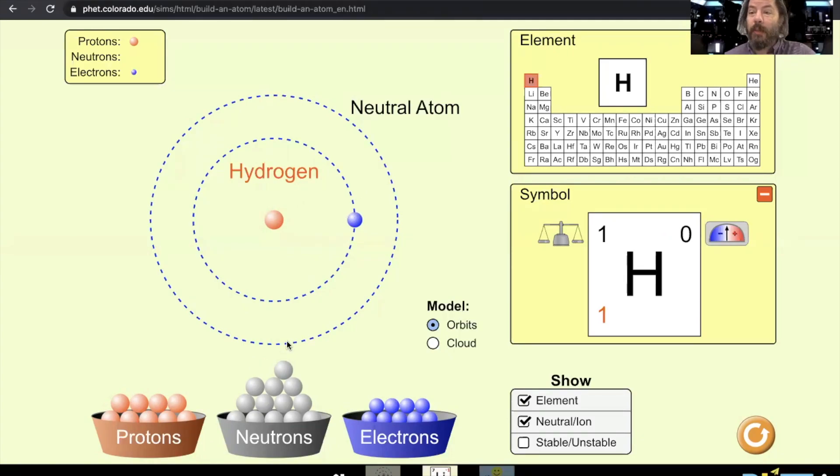Usually a stable atom of hydrogen only has one proton, no neutrons, and one electron. If I add neutrons, I get what's called an isotope and those basically are used to make heavy water and are used in nuclear processes.